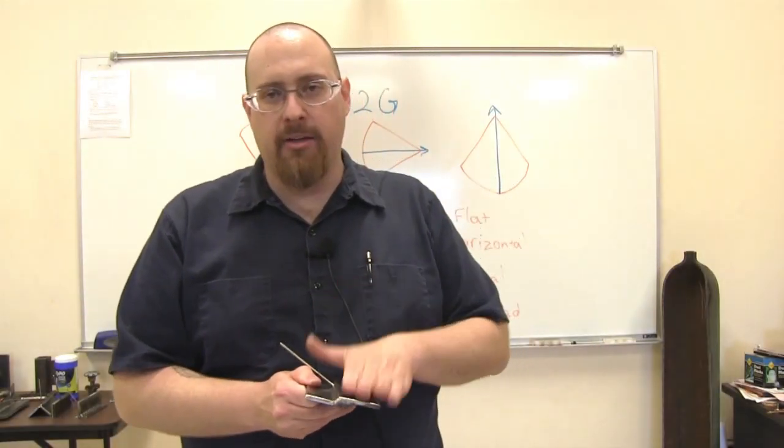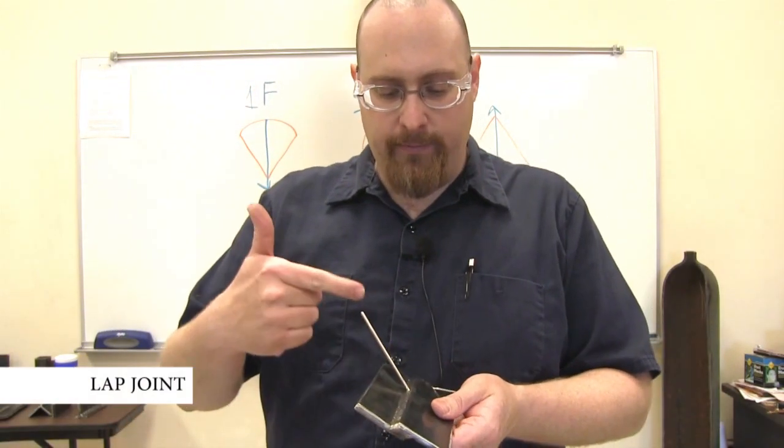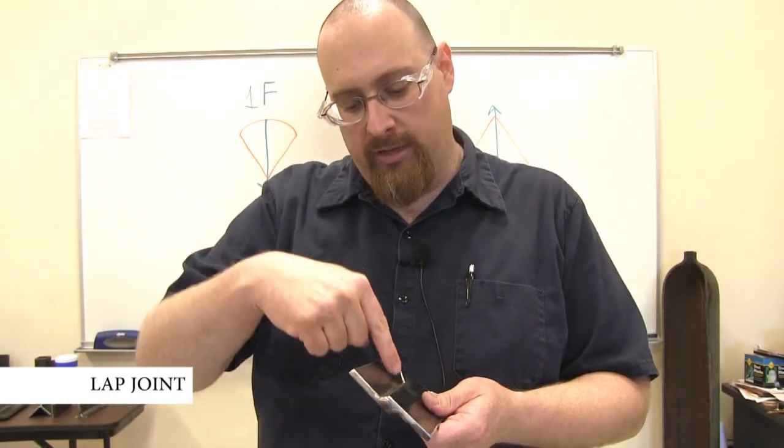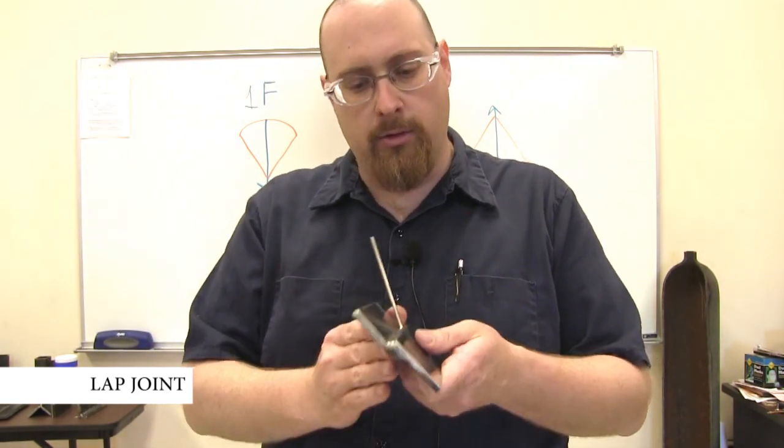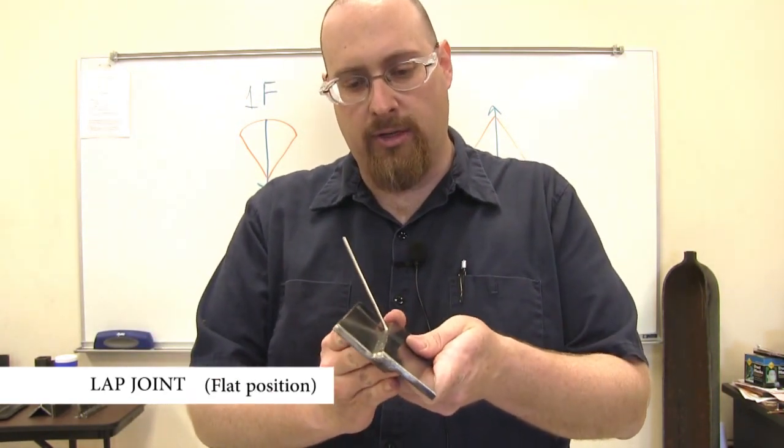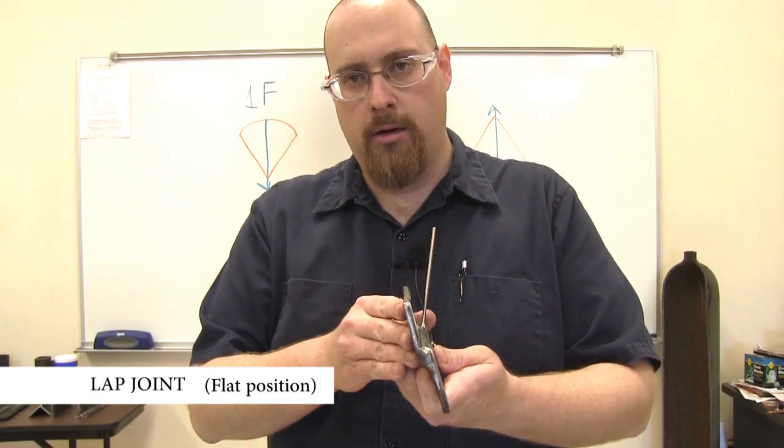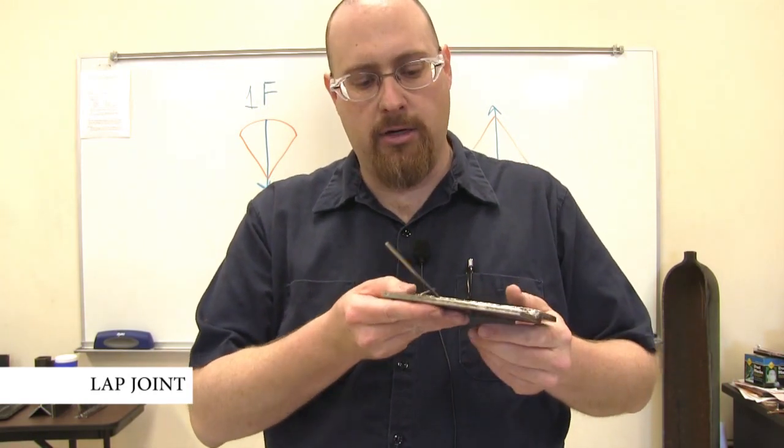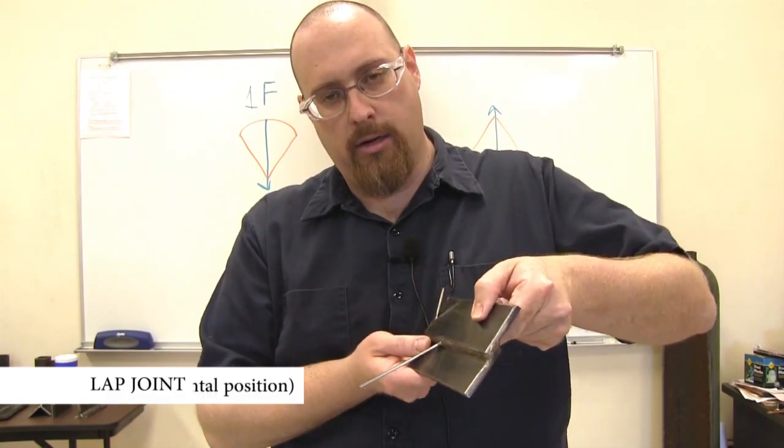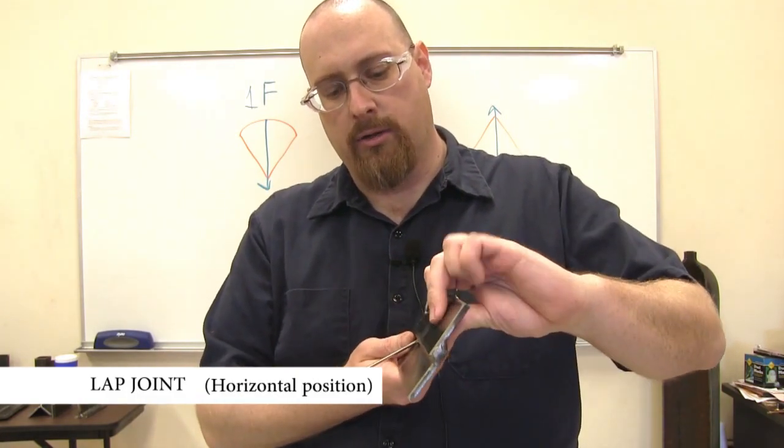The first one we're going to look at is our lap joint and if you look this piece of metal is going to be where our electrode is pointing and it goes down through the center of the face and then out the root. So when my lap joint is sitting anywhere between here and here that's flat. If I turn it and I'm between here and here we're looking at horizontal.